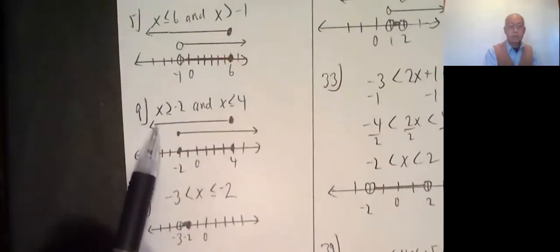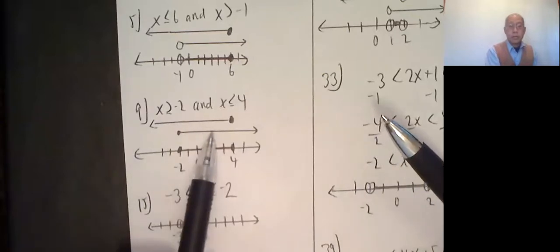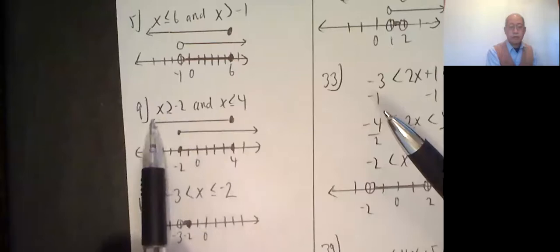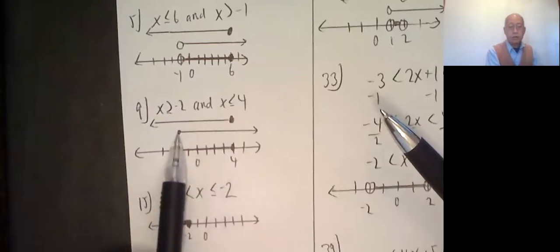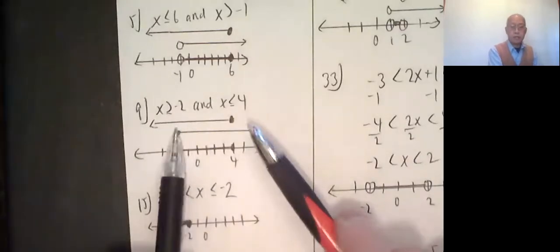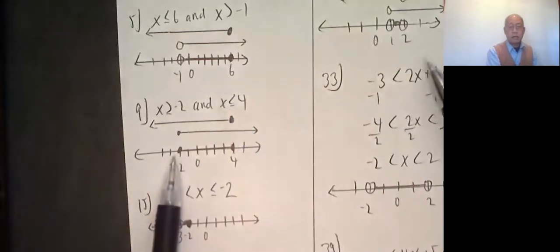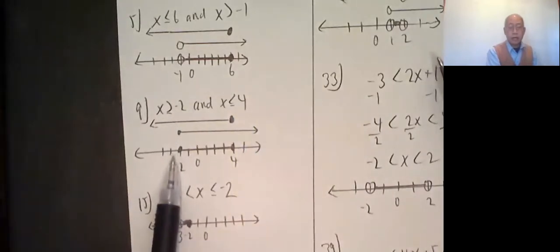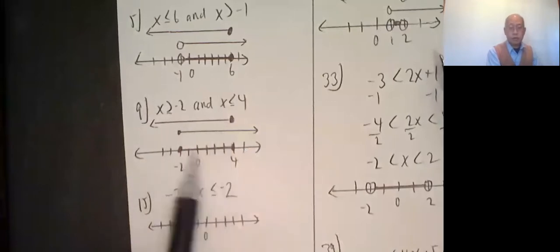Number 9 is again an and. So, x is less than or equal to 4, I've got over here, closed circle. Greater than or equal to negative 2, closed circle, go here. And connecting word is and, so it has to be in both sets. So imagine taking this and bringing it straight down. So I have the interval from negative 2 to 4. Negative 2 is counted twice, 4 is counted twice and everything in between.